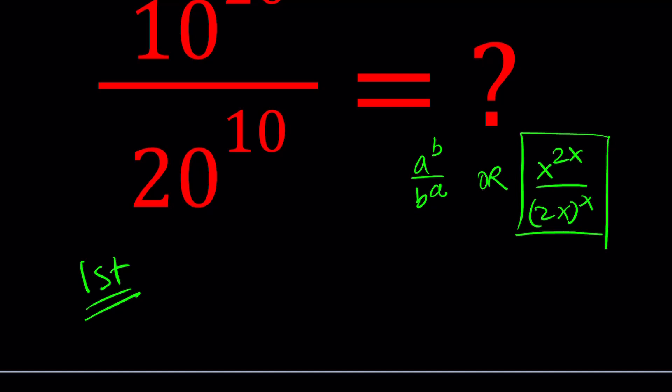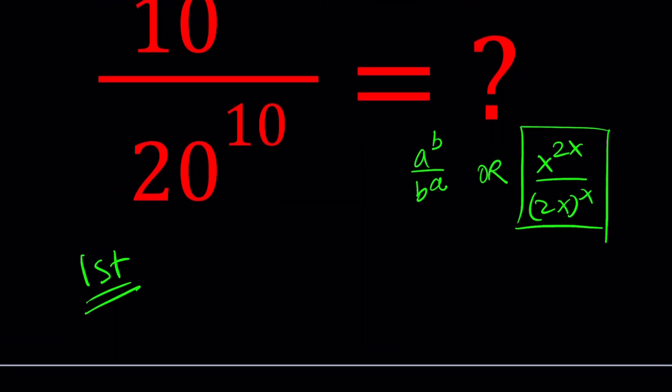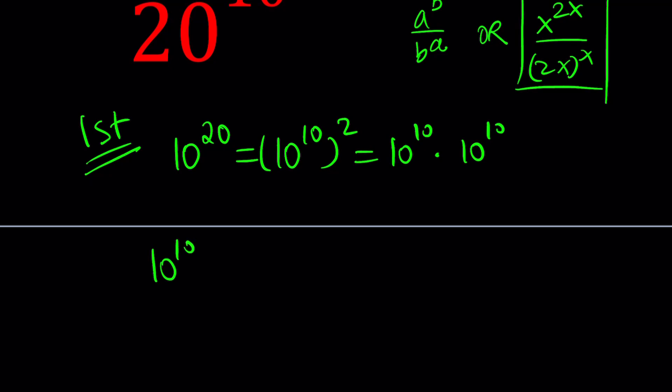But for my first method, I want to use the same exponents. So 10 to the power 20 is basically 10 to the power 10 squared. In other words, 10 to the 10 times 10 to the 10. So let's go ahead and replace it with that. So we start with 10 to the 20 divided by 20 to the 10. Replace the 10 to the 20 with 10 to the 10 times 10 to the 10.